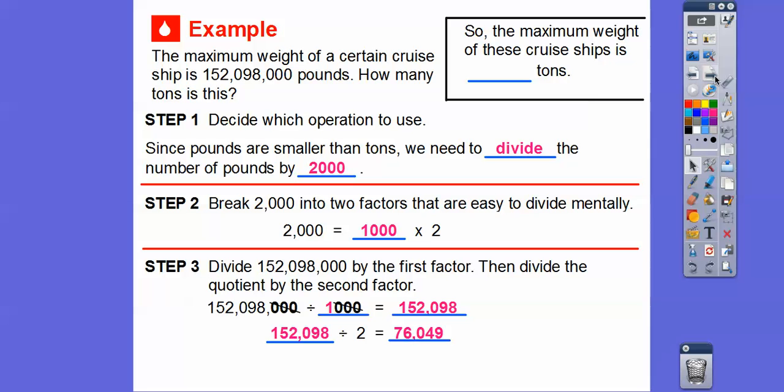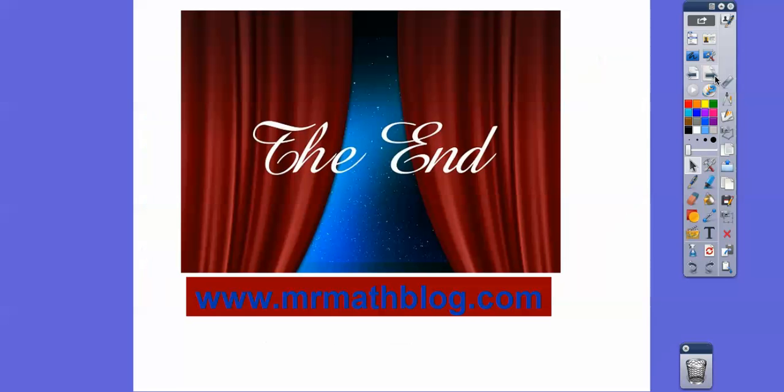So this is going to equal 76,049 when we divide that by 2. So the maximum weight of these cruise ships is, that's how many tons it is, 76,049 tons. All right, you guys, that's it. I'll take care. Here we go.